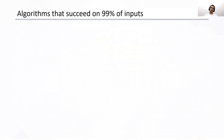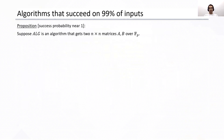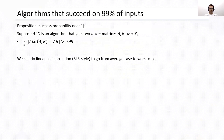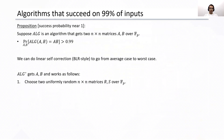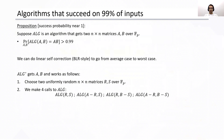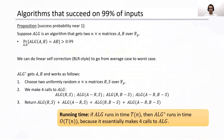Let's talk about algorithms that succeed on 99% of inputs. Here's a proposition: suppose we are given an algorithm that, given two matrices A and B, computes the product with quality 99%. Then we can do a linear self-correction using the BLR technique to go from average case to worst case. Given A and B, we sample two random matrices R and S, make four calls to the original algorithm, and output their sum. The running time is basically the same — we're just making four invocations. Each one of these calls is a uniformly random call over the input space, so they will be correct with quality 99%.